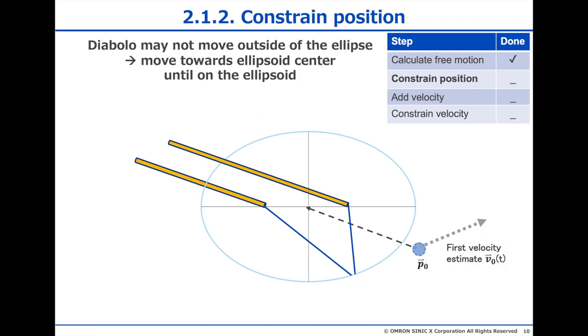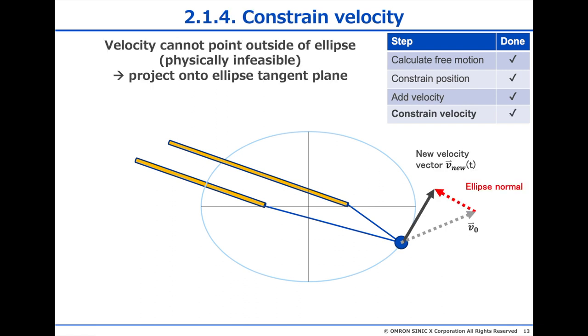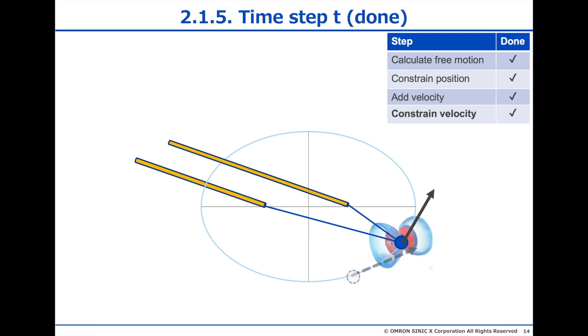First, we constrain the position by moving the Diabolo towards the center until it is on the ellipse. That gets us here. Next, we would add velocity from the motion of the sticks, but because the sticks didn't move, we skip this step. In the fourth step, we constrain the velocity so it does not point outside of the ellipse by projecting it onto the tangent plane of the ellipse. And that's it for this step. We're done. This is how we went from one time step to the next for the stationary sticks. The Diabolo moves along the string naturally and it went up the string just as we would expect.